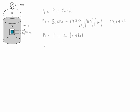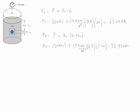So h1 plus h2 equals 2.6 meters. pb is going to be 50 kilopascals plus 9.8 kilonewtons per meter cubed times 0.9 for the specific gravity of the oil, and the height is 2.6 meters. The value of this pressure is equal to 72.93 kilopascals.